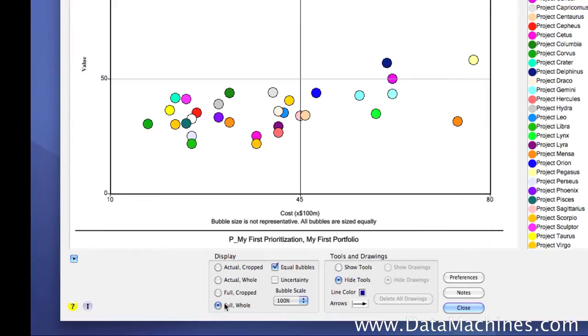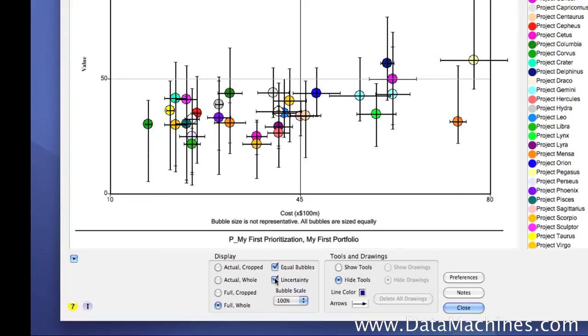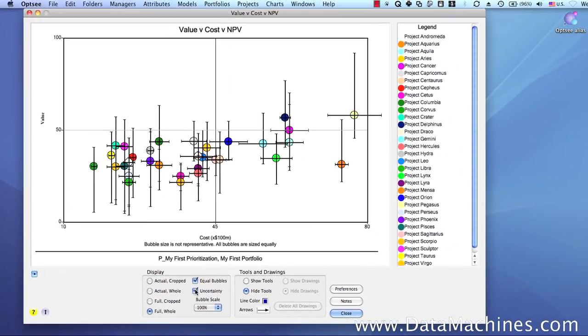We can also see the uncertainty that is associated with each project in this view by clicking on the Uncertainty checkbox. Now, let's take a look at some of the ways that bubble charts can be used to study your portfolios.